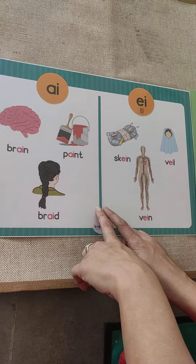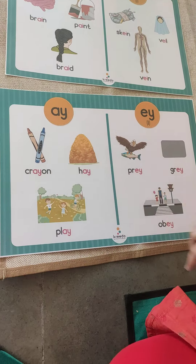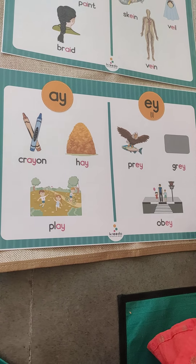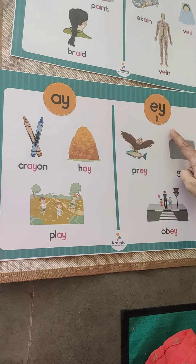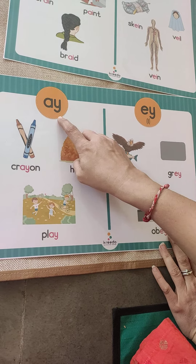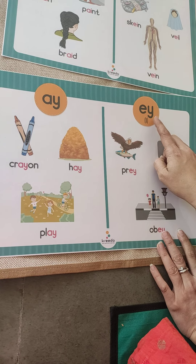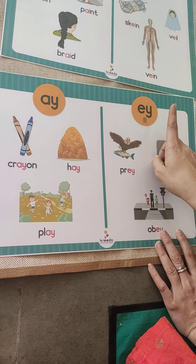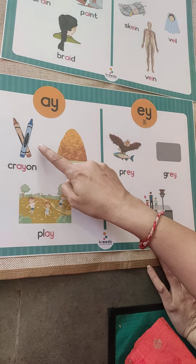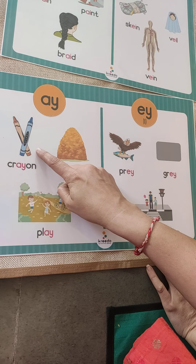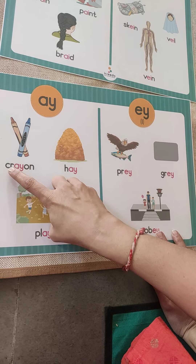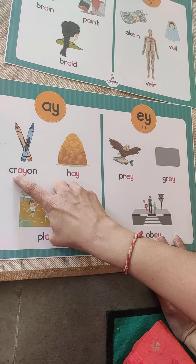Now let us see what we are going to learn today — AY and EY vowel phonograms. This is the picture of crayon. Crayon — AY is the blend. Crayon.